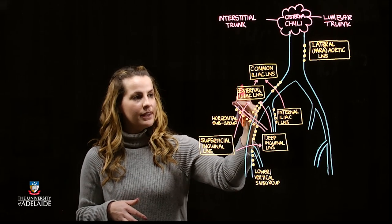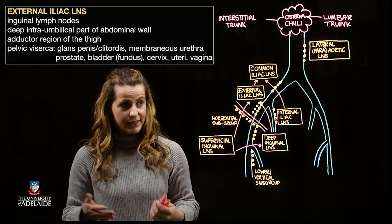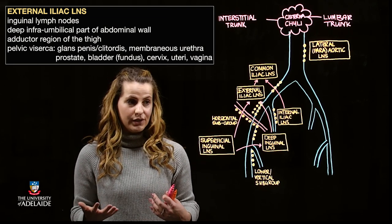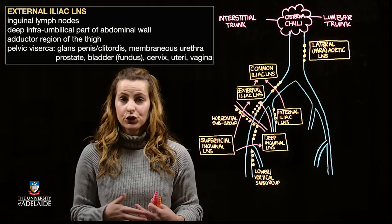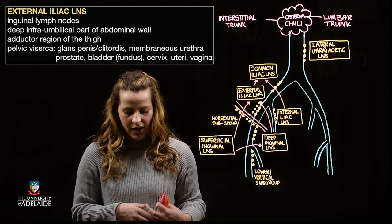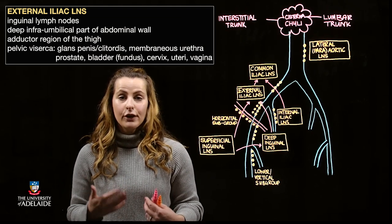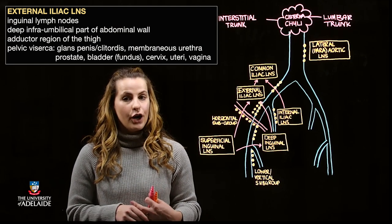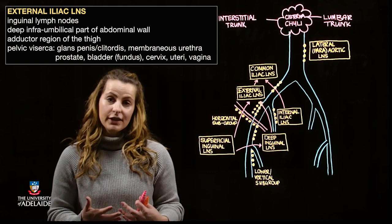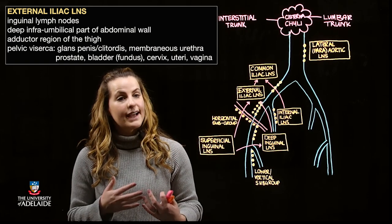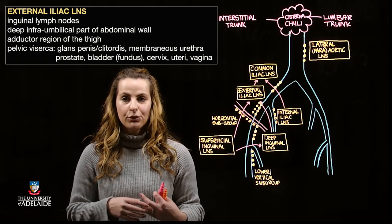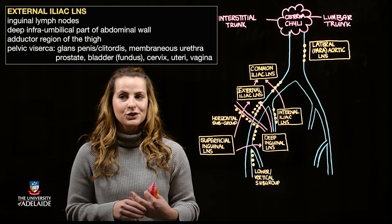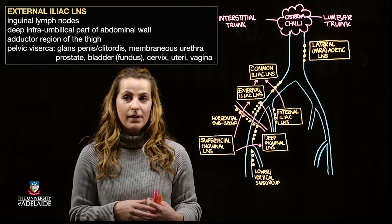Tracking back to the external iliac lymph nodes, these specifically receive lymph from the inguinal lymph nodes — both superficial and deep subgroups — as well as the deep infra-umbilical abdominal wall, the adductor region of the thigh, and some of the pelvic viscera. More specifically: the glands, penis and clitoris, the membranous urethra, the prostate, the fundus of the bladder, the cervix, uteri, and parts of the vagina.